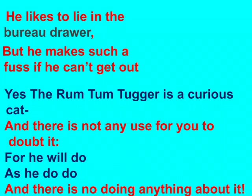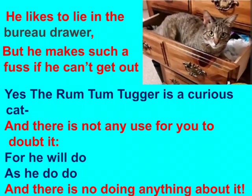The Rum Tum Tugger likes to lie in the bureau drawer. A bureau is a writing table with many drawers — a writing desk in which many drawers are there, which we can use to keep our belongings. The Rum Tum Tugger likes to lie in the bureau drawer, but when he is not able to come out, he makes a fuss. As soon as he lies in the drawer, after some moments he wants to get out of it. And if he is not able to do so, he creates a fuss.